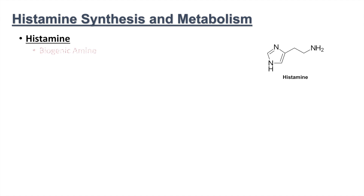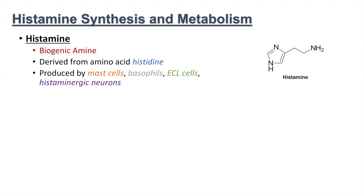To begin, histamine is a biogenic amine. It acts as a signaling molecule in the periphery, but it also acts as a neurotransmitter in the central nervous system. Histamine is derived from the amino acid histidine. Histamine is produced by several different types of cells: mast cells, basophils, ECL cells, and histaminergic neurons, as well as other cell types at lesser amounts. When histamine is produced, it typically gets stored in granules within these cells.